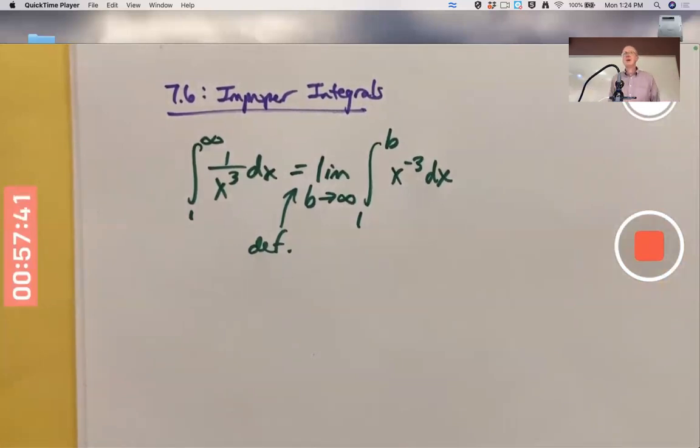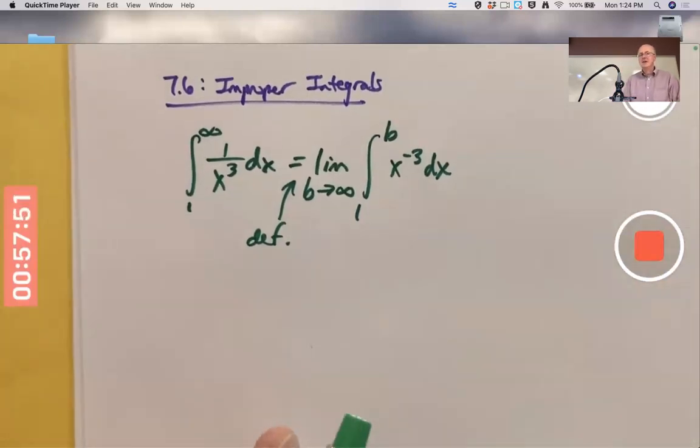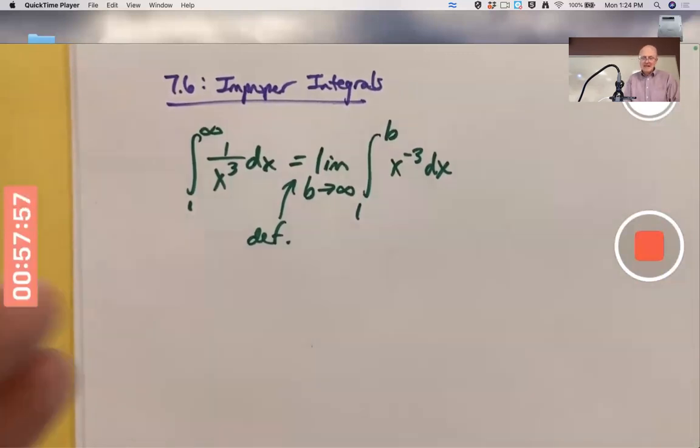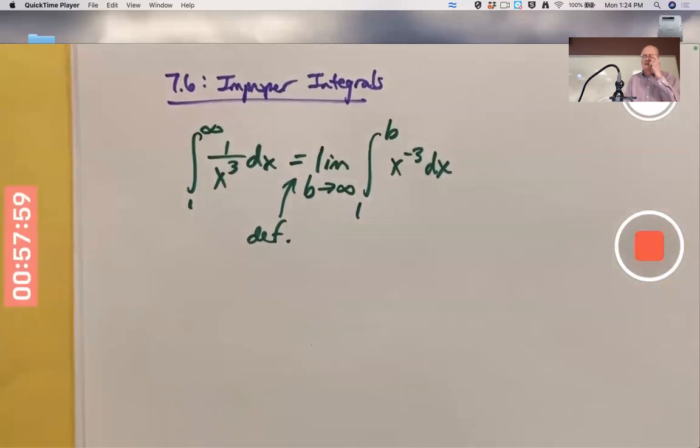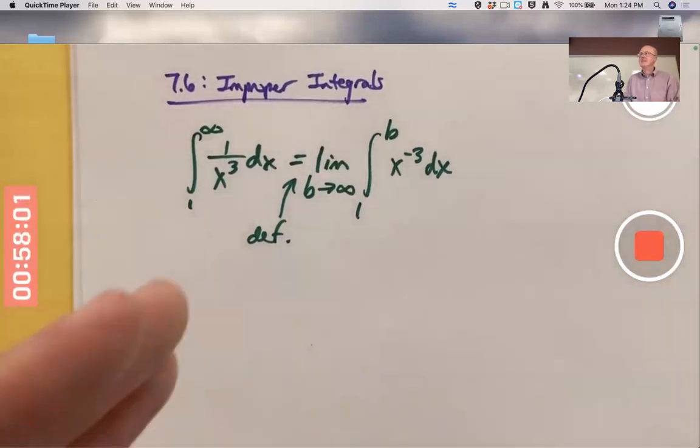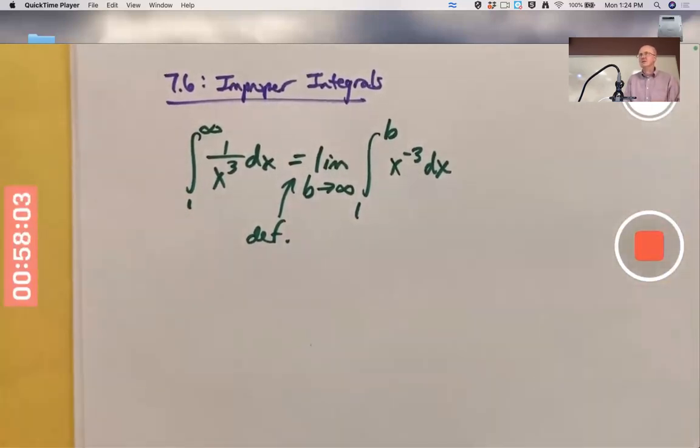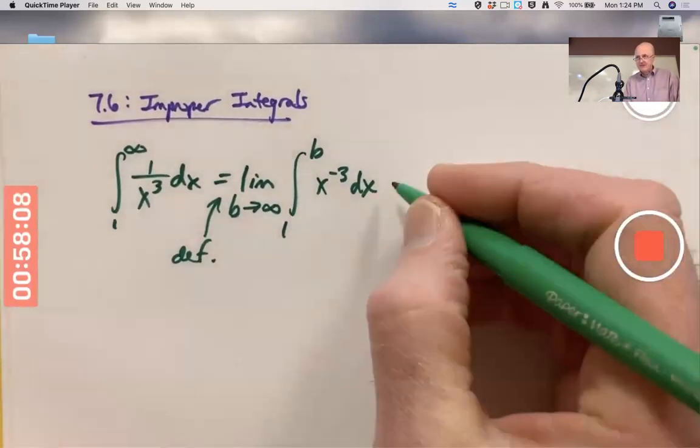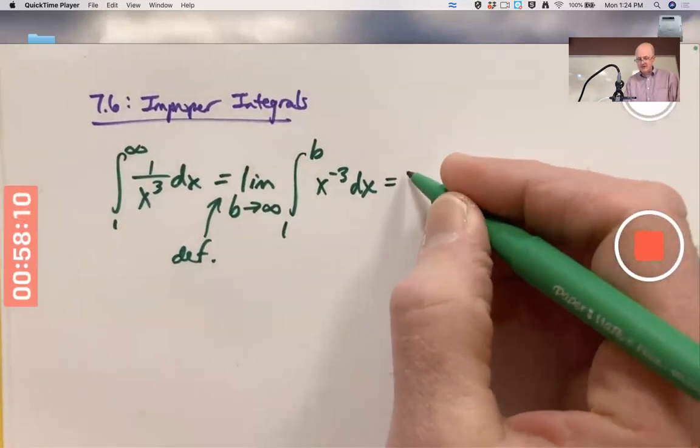Now, you know from past experience, especially in Calc 1 even, that limits may or may not exist. So this limit, though it's a definition, may or may not exist. If it does exist, we say the improper integral converges, and if it doesn't exist, we say the improper integral diverges. I will write that down in a bit here, but not right now. So I want to see if this one does converge or diverge to begin with.